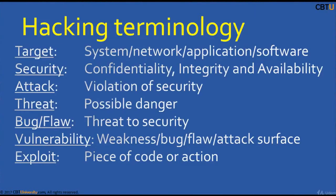An unlocked door is analogous to a bug. Vulnerability is a weakness, bug, or flaw which allows a hacker to exploit and compromise the system or application to achieve their objectives. The objective may be damage, loss of data, or anything else. Vulnerability is also known as the attack surface. An Exploit is a piece of code written to take advantage of a vulnerability to compromise the target. Hackers use exploits on vulnerabilities to gain access to the target and fulfill their malicious objectives.